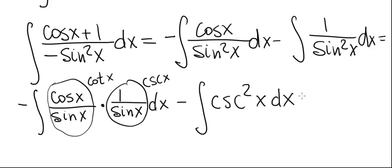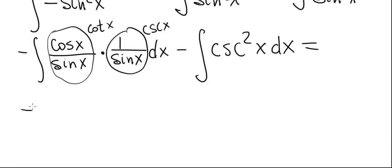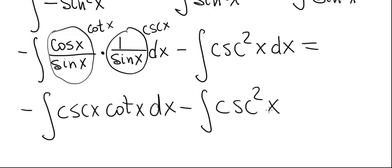And now we'll rewrite the first integral as minus the integral of cosecant of x times cotangent of x dx minus the integral of cosecant of x. Now these two integrals are what we call basic integrals because all we have to do is find the function whose derivative is the respective integrand.